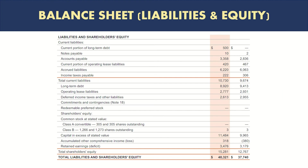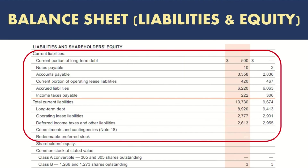Looking at the balance sheet of Nike again, we are now looking at the liabilities and equity section. The top section shows all the liabilities the company had for the year ended May 31st, 2022, with the respective amounts shown in dollars.